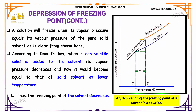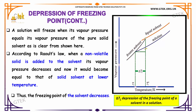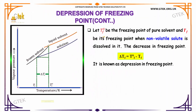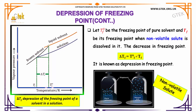A solution will freeze when its vapor pressure equals the vapor pressure of the pure solid solvent, as shown in this picture. According to Raoult's Law, when a non-volatile solid is added to the solvent, its vapor pressure decreases, and it would become equal to that of the solid solvent at a lower temperature. Thus, the freezing point of the solvent decreases. Let Tf° be the freezing point of the pure solvent and Tf be the freezing point when a non-volatile solid is dissolved in it.